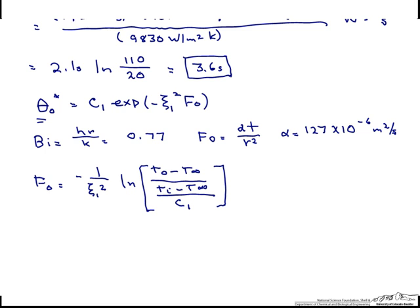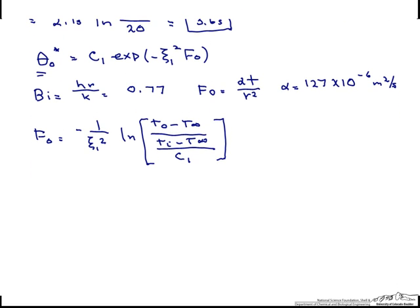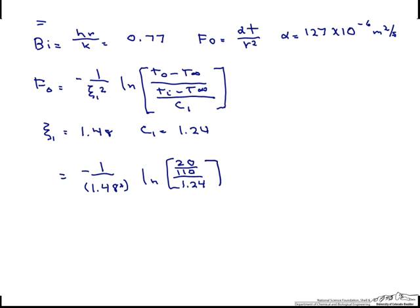So let's look them up for Biot number of 0.77. We find that the first constant is 1.48. Our c1 is 1.24. So when we calculate this out, we find that our Fourier number is 0.876.